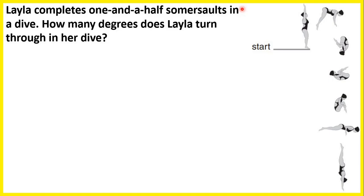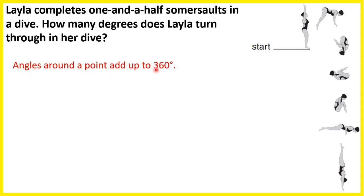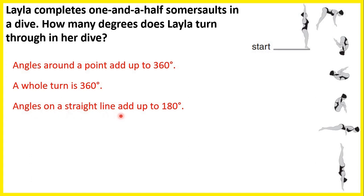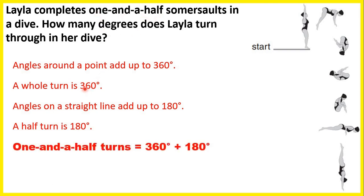Laila completes 1.5 somersaults in a dive. How many degrees does Laila turn through in her dive? We know that a whole turn is 360 degrees, and angles on a straight line add up to 180 degrees, so a half turn is 180 degrees. If she completes one and a half turns, we can add a whole turn and a half turn — 360 plus 180 — and that gives us 540 degrees.